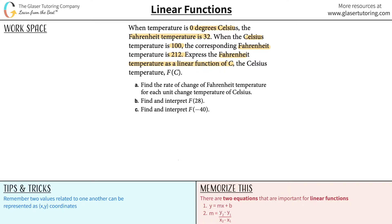Whenever they give us two pieces of data — they tell us that when it's zero degrees Celsius, the Fahrenheit temperature is 32, that's one piece of data, and when the Celsius temperature is 100, the Fahrenheit temperature is 212 — they basically give us two points on a graph.